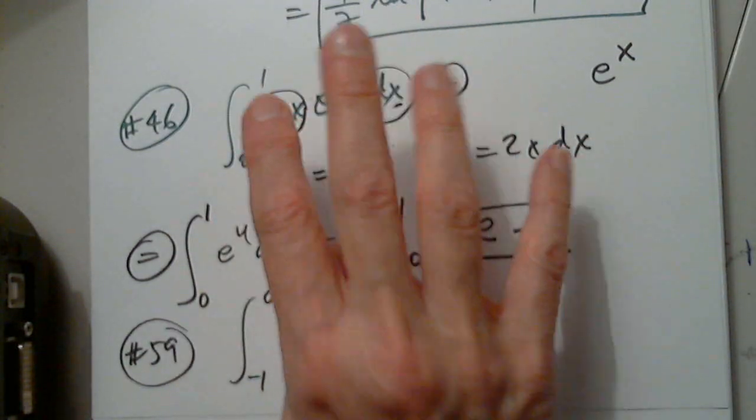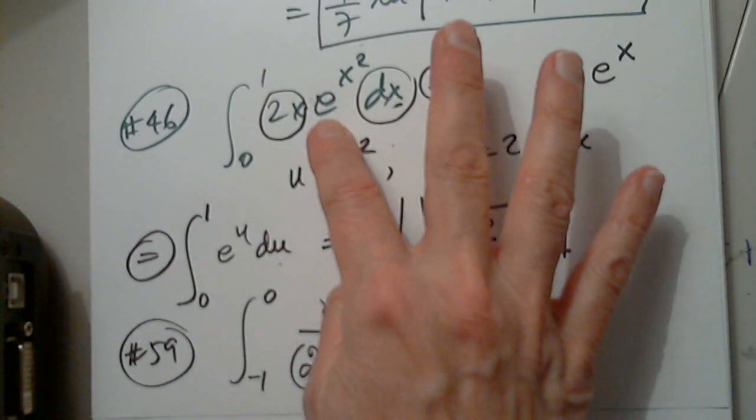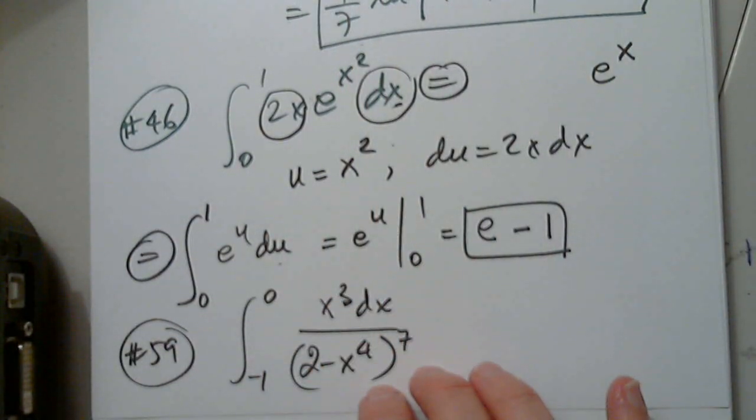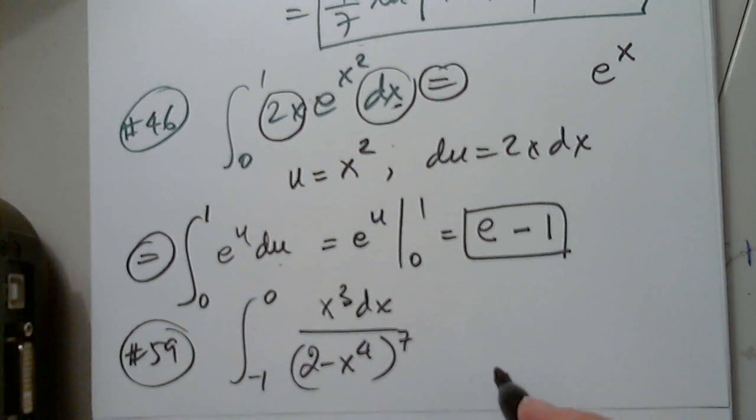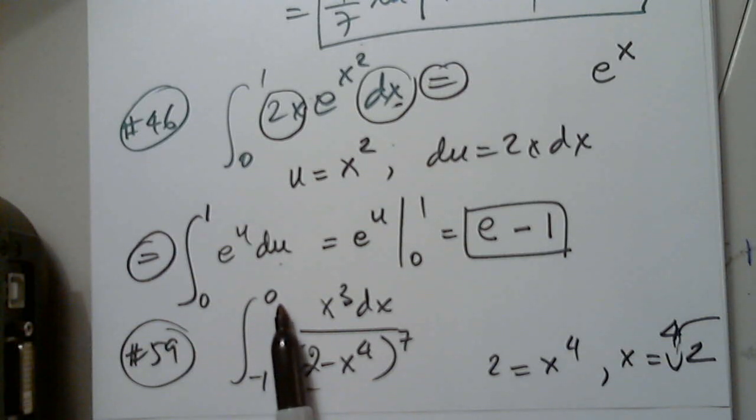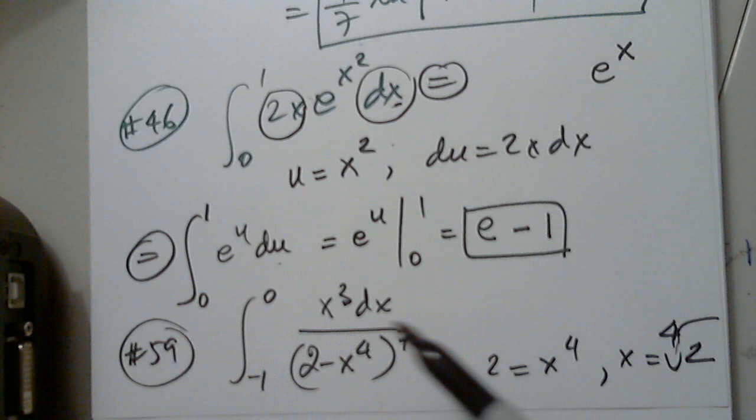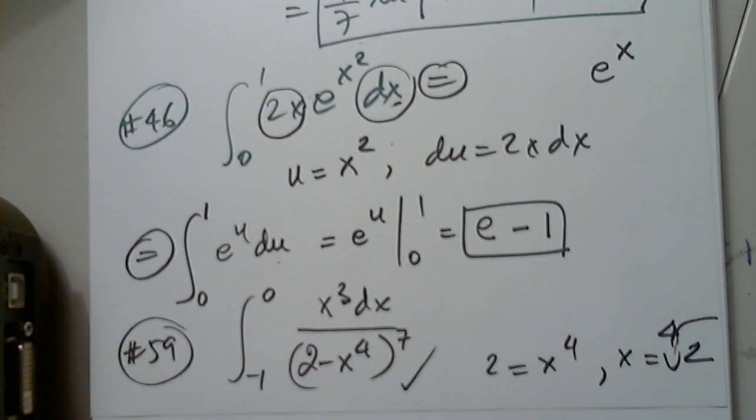Remember, every time we have a definite integral, we always have to look at this function and say, is it continuous on negative 1 to 0? Yes, it is. x is continuous everywhere. e to a power is continuous everywhere. Same thing here. So, I have to make sure that 2 minus x to the 4th is not 0 between negative 1 and 0. Because if it is, then this function is not continuous on negative 1, 0. So, can this be 0? 2 equals x to the 4th or x equals the 4th root of 2. But the 4th root of 2 is a number greater than 0. So, this is undefined for the 4th root of 2. But the 4th root of 2 is not a number between negative 1 and 0. It's a positive number. It's not between negative 1 and 0. So, the function is safe. It's continuous on negative 1, 0.